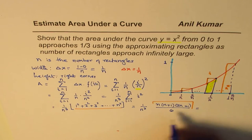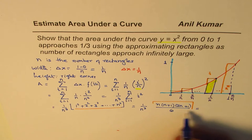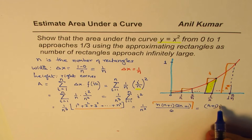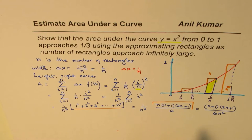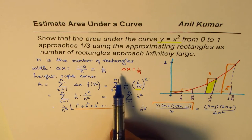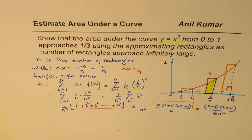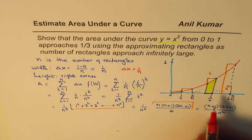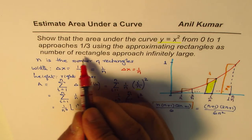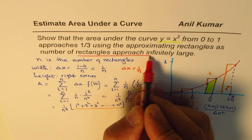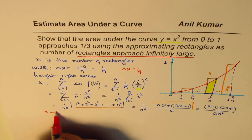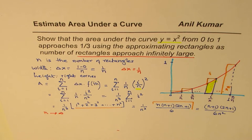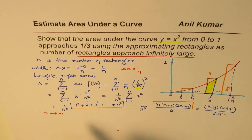Now we can simplify this a bit. One n cancels. So what we have here is n plus 1 times 2n plus 1 divided by 6n square. Now the idea is that n has to be large so that we can find some accurate value for the graph. So we say when the number of rectangles approach infinitely large, if n is a large number, in that case what happens to this area, this is what we'll analyze now.